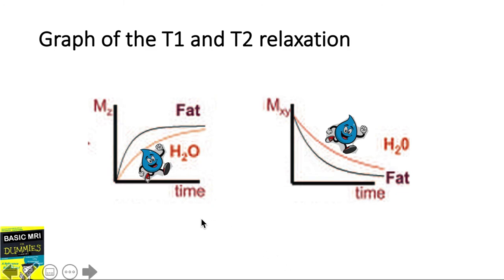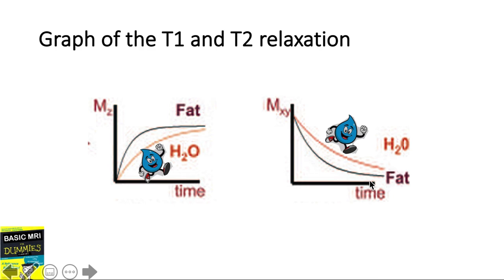Now what about water? We see that water takes a longer time to regain its longitudinal magnetization compared to fat, and it also takes a longer time for water to lose its transverse magnetization. Therefore, water has a long T1 and a long T2 property. Water is then dark on T1 compared to fat, and water will appear white or bright in T2 sequences compared to fat.